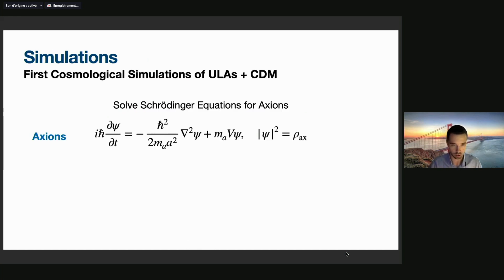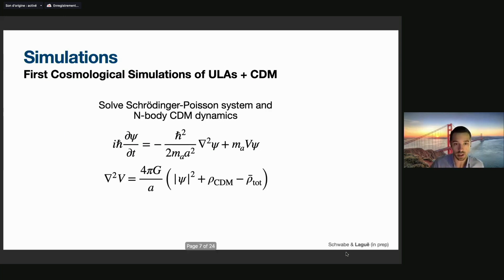So if we want to study the behavior of these ultralight axions, because their de Broglie wavelength is much larger than the inter-particle separation, they are described by a wave function where the modulus of the wave function squared is simply the density. The evolution of the wave function is given by the Schrödinger equation, the potential in this case is simply the gravitational potential. These two equations together form the Schrödinger-Poisson system. We note here that the cold dark matter will couple to the axions through the gravitational potential, so both feel the same potential well.